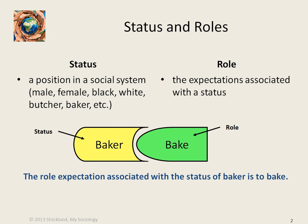Now we want to add to that concept the concept of role. A role is the expectation associated with the status. For example, if you had the status of baker, then society would expect you to bake. So the role expectation associated with the status of baker is to bake.